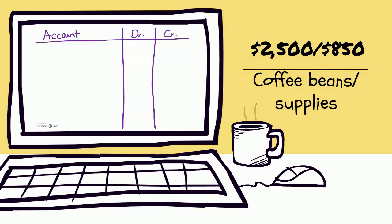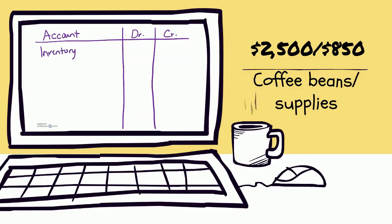Next, we purchased coffee beans for twenty-five hundred dollars and supplies for eight hundred fifty dollars. We had assets increasing and we paid cash, so we also had another asset decreasing. We have two different assets increasing: coffee beans, which we hope to sell, would actually be Inventory, and then we also have Supplies. Supplies are a type of asset — different from inventory — you're not hoping to sell the supplies, you're just using them in the course of business. This was for eight hundred fifty dollars, so we're going to debit Supplies.